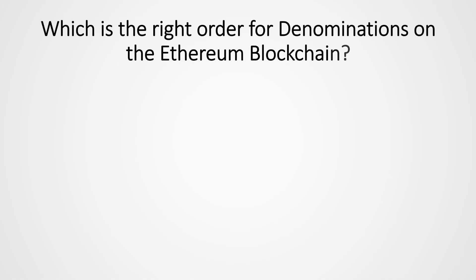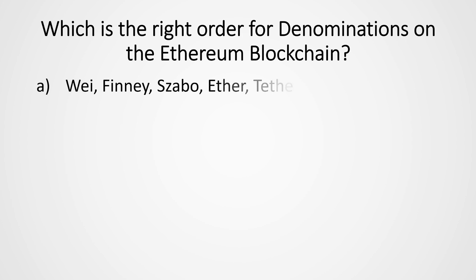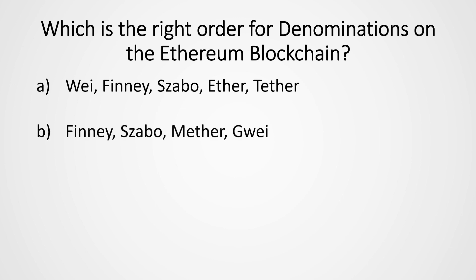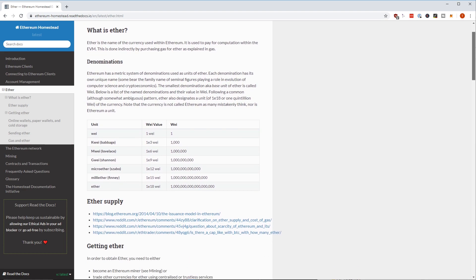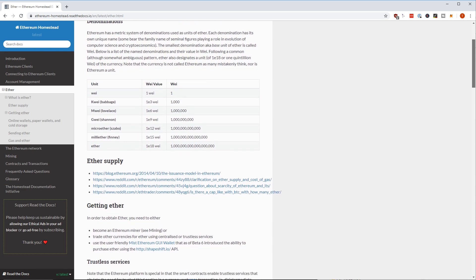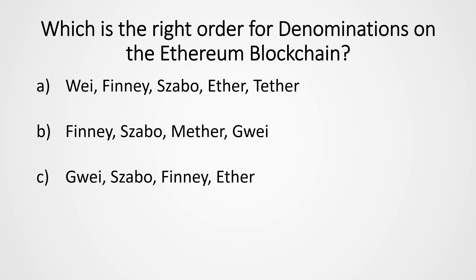Next question: Which is the right order for denominations on the Ethereum blockchain? Like Bitcoin, Ether is not the smallest unit on the Ethereum blockchain. The smallest unit is Wei, followed by Kwei, MegaWei or MWei, Gwei, Szabo, Finney, and Ether. So the correct answer is C.